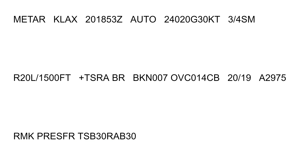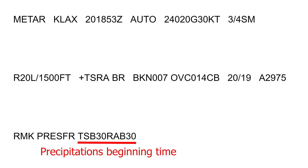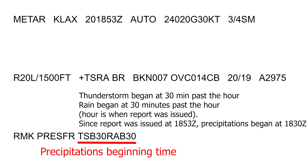Sometimes you will see additional remarks. This typically denotes the time when a certain weather phenomenon began. In this case it means a thunderstorm began at 30 minutes past the hour and rain began at 30 minutes past the hour, or 18:30 Zulu time.